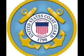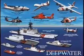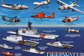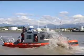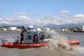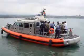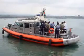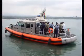Coast Guard: The United States Coast Guard was originally established as the Revenue Cutter Service in 1790. In 1915, it was reformed as the United States Coast Guard under the Treasury Department. In 1967, the Coast Guard was transferred to the Department of Transportation, and legislation passed in 2002 transferred the Coast Guard to the Department of Homeland Security.